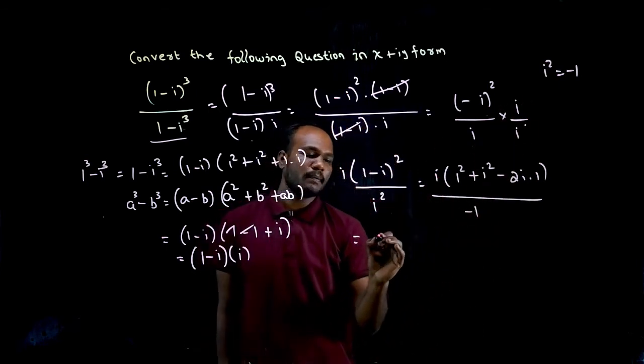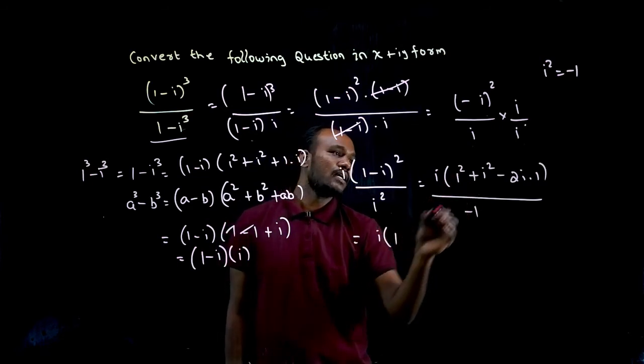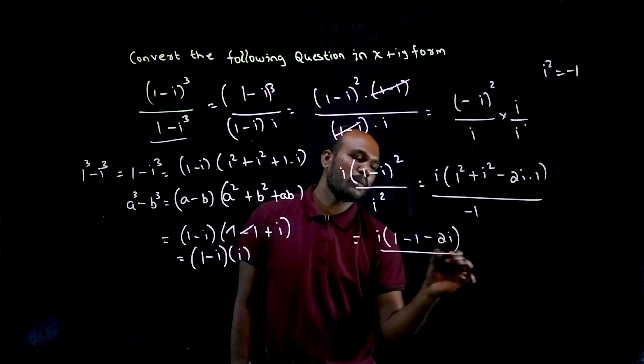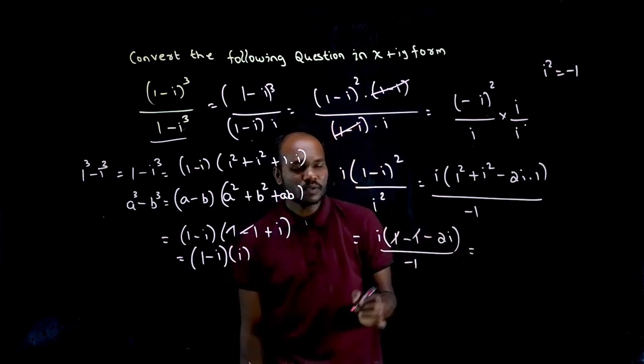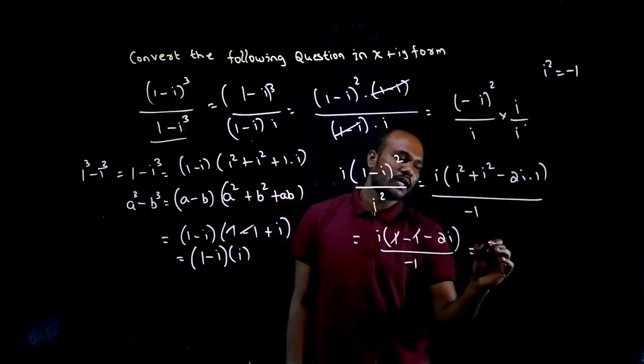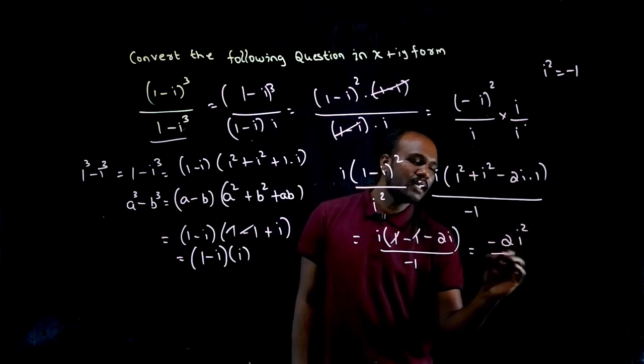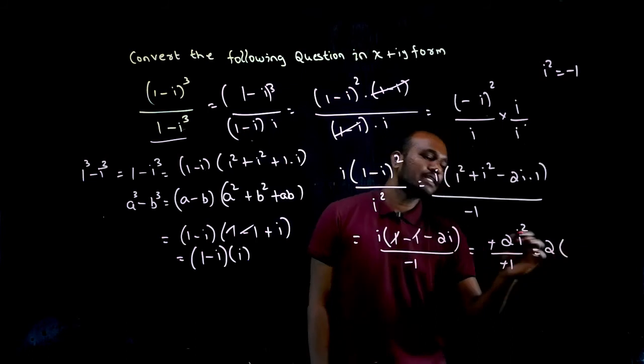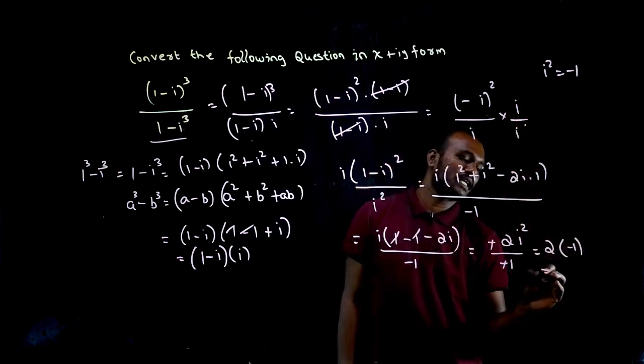So I have i times (1 + (-1) - 2i) over -1. That's i times (-2i) over -1. i into i is i², so -2i² divided by -1. The minus signs cancel. What is i² value? Minus 1, so we get -2.